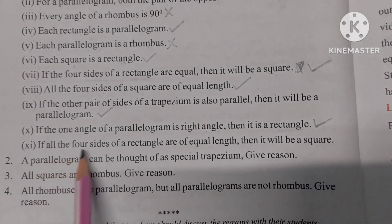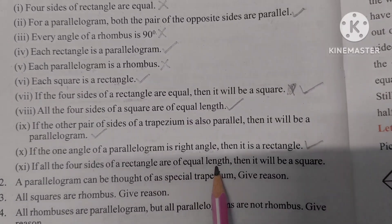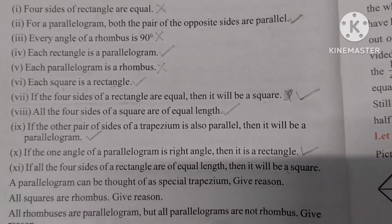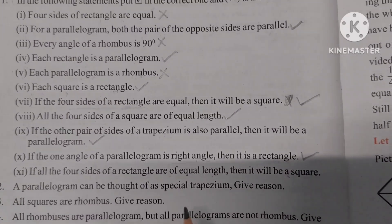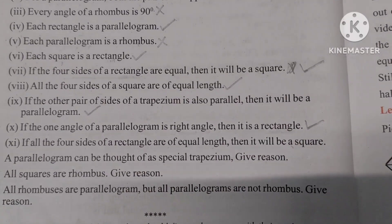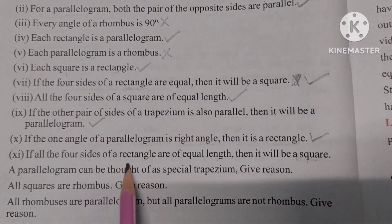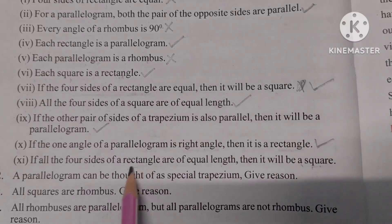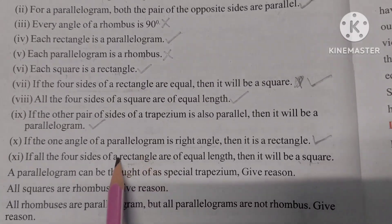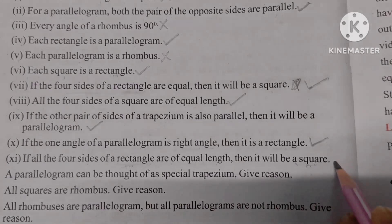Number 11: If all four sides of a rectangle are of equal length, then it will be a square. A rectangle with all four sides equal satisfies the properties of a square. So this statement is correct.